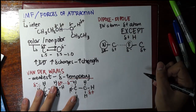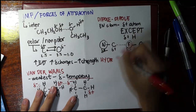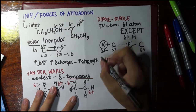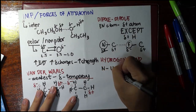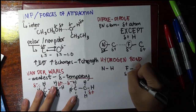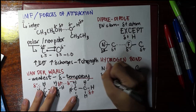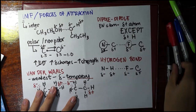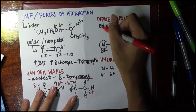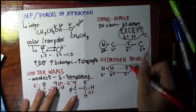The third type is the hydrogen bond. I made that exception earlier: if the partially positive atom is specifically hydrogen, then we call this force of attraction a hydrogen bond rather than dipole-dipole. Simply said, a hydrogen bond is an interaction between an electronegative atom and a partially positive hydrogen — such as the case we see here.